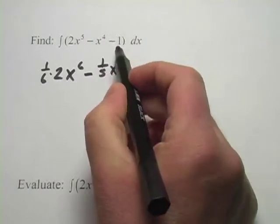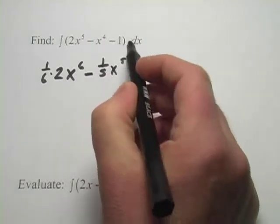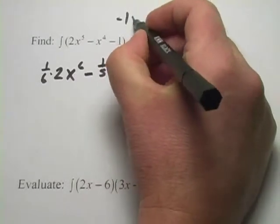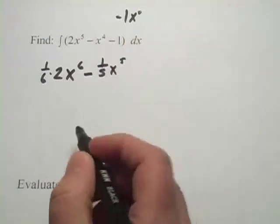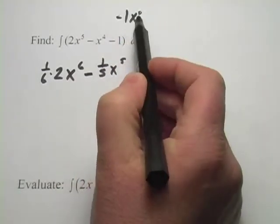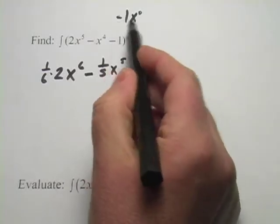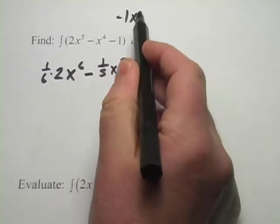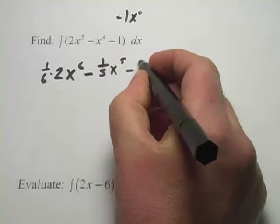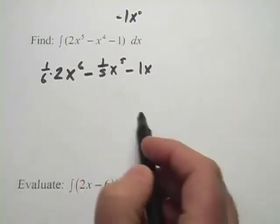And then negative 1, well negative 1, you can think of negative 1 as negative 1 times x to the zero power. Anything to the zero power is 1, so negative 1 is negative 1 times x to the zero power. When we raise the power there by one, what we're going to get is negative 1 times x, or just negative x.